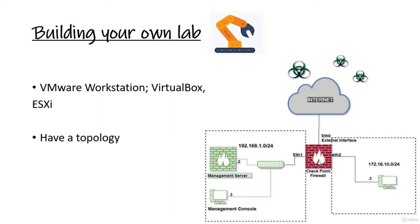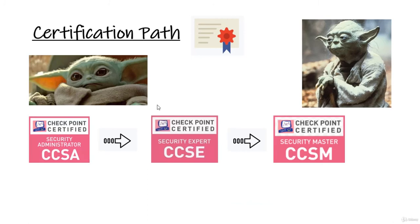As for the certification path, you're going to start by being a Security Administrator - that's what this course is all about: administrating Check Point, deploying different services and blades, understanding how these concepts and blades work together. Once you go through the certs, you start with CCSA, then go to CCSE which is Security Expert, and then you become a master. I've gone through all of them and got the latest cert.